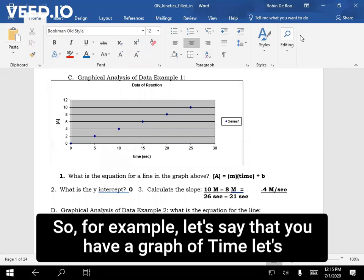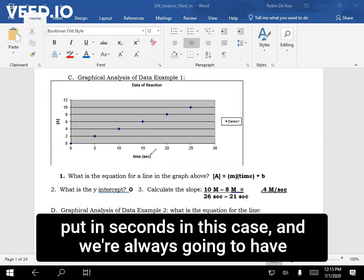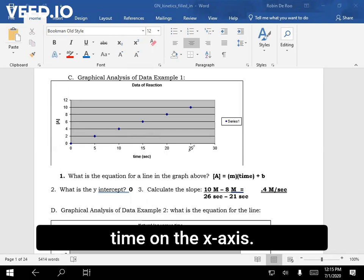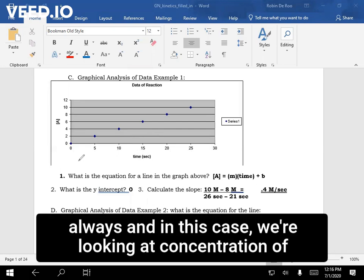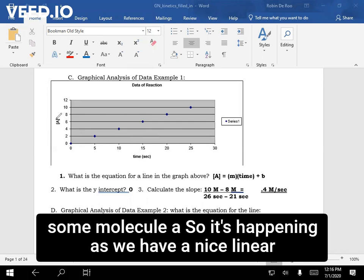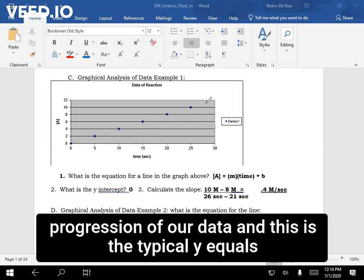let's say that you have a graph of time, let's put it in seconds in this case, and we're always going to have time on the x-axis, always, and in this case we're looking at concentration of some molecule A. So what's happening is we have a nice linear progression of our data.